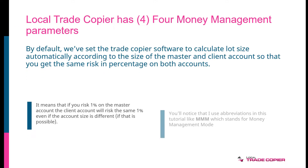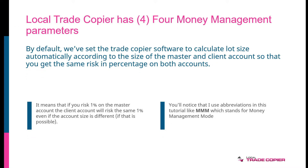The Local Trade Copier has four money management parameters. All the money management in the Local Trade Copier, you can control with these four parameters. By default, Local Trade Copier is set to calculate lot size automatically according to the size of the master and the client account.